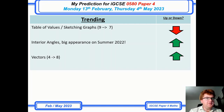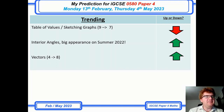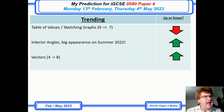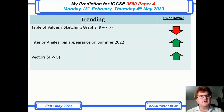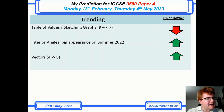So I'm going to go through my trending here. One thing I've noticed looking at the very recent past papers is that table of values and sketching graph style questions have dropped slightly. They do appear fairly often — around 50% of the time — but they are certainly on the downside.